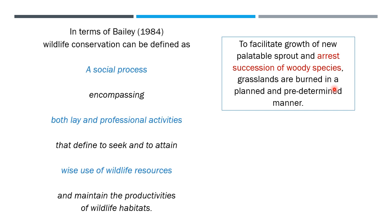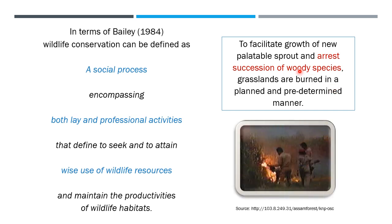According to the Government of Assam Forest Department, the burning is carried out to facilitate the growth of new palatable sprouts for a variety of animals, and to arrest the succession of woody species. We do not want woody species or woodlands to invade the grasslands. For that reason, grasslands are burned in a planned and pre-determined manner — this is controlled burning of the grassland.